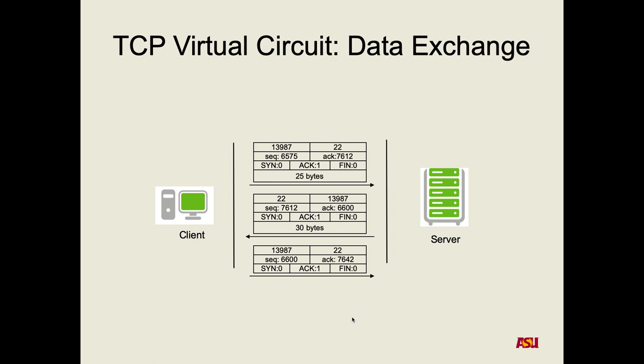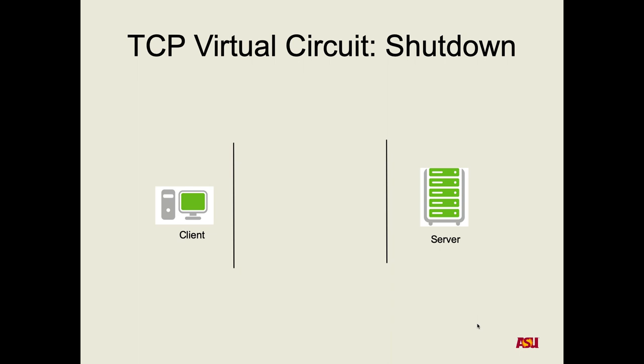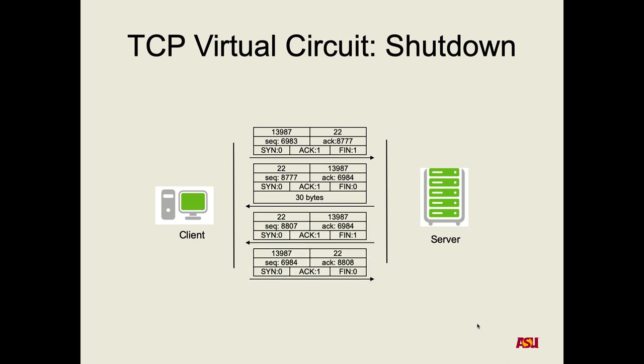To shut down, how does one side tell the other it's done talking? It sends a FIN packet, which says 'I will send no more data to you.' Because this is two-way communication, both sides have to send FIN packets and acknowledge each other's FIN packets. At that point the connection is shut down — no more connection.